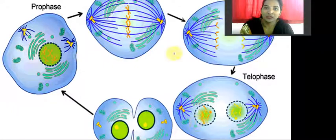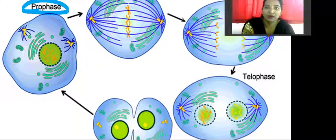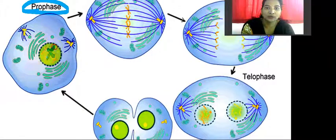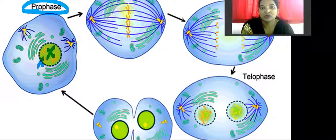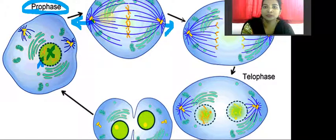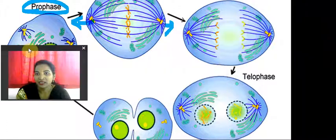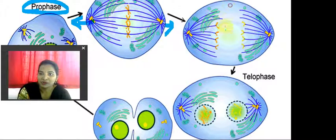As you can see, this is prophase — the nucleus, nuclear membrane, and chromosomes are just about to separate. In metaphase, the chromosomes are pulled towards the polar regions by the spindle fibers. In the anaphase stage, separation has already taken place — one chromosome here and one more chromosome here.